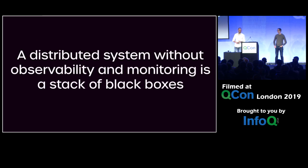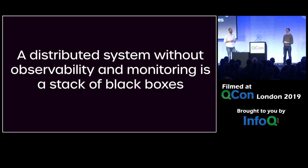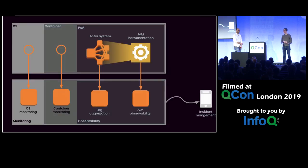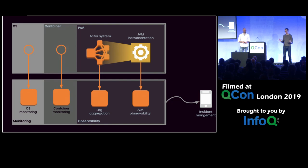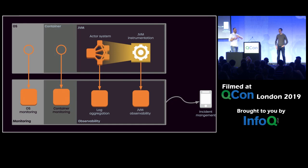You should observe. A distributed system without observability and monitoring is a stack of black boxes. We're building a thing to observe and monitor other things, but we also need to observe and monitor our own thing — monitoring and observability all the way down. What's the difference? Monitoring tells you when your application fails. Observability is the facility to find out why.